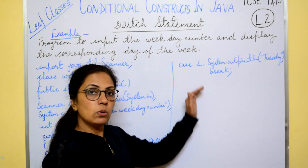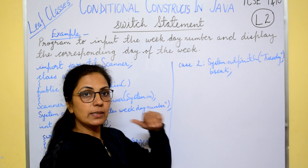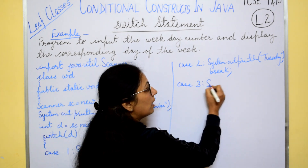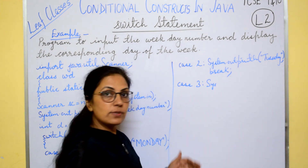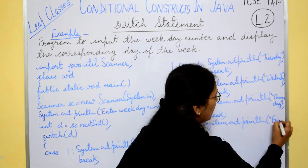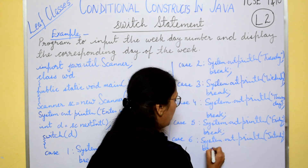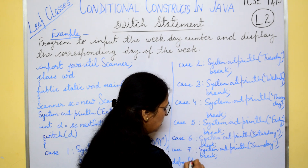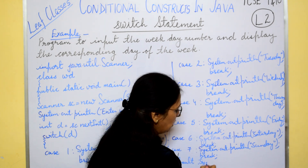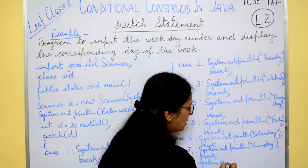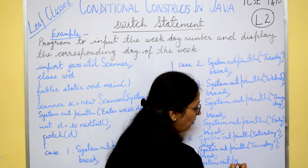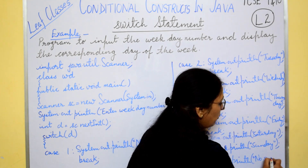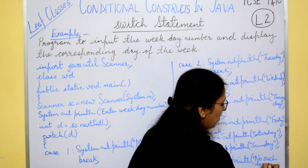If the value is 2 it will display Tuesday and terminate the switch construct. Similarly we give cases for 3, 4, 5, 6, 7 — Wednesday, Thursday, Friday, Saturday, Sunday — each followed by break. Then we write default. If none of the cases matches the control value, the default statement executes. Here we write System.out.println("No such day number"), and then close the switch, main, and class.